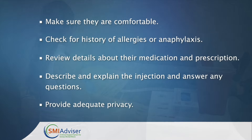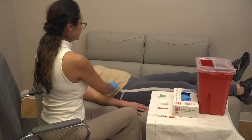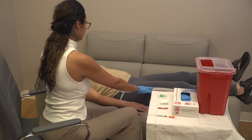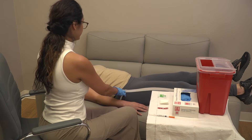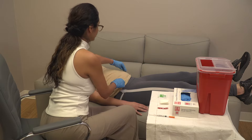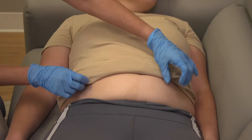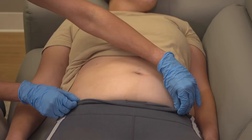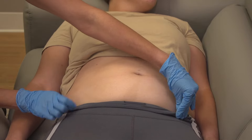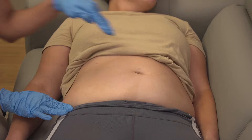For this injection procedure, make sure that you provide adequate privacy for the individual. Then position them in the appropriate posture for the injection. For the abdominal subcutaneous site, that means they should lie back with any outer garments or jackets removed, and their shirt removed or pulled up enough to expose the injection site area.